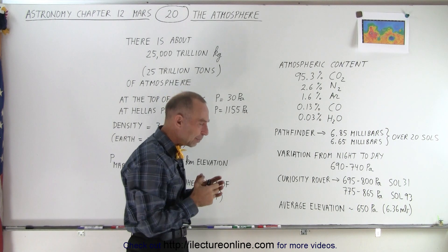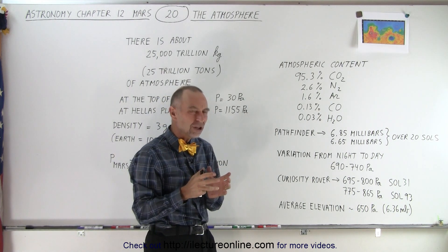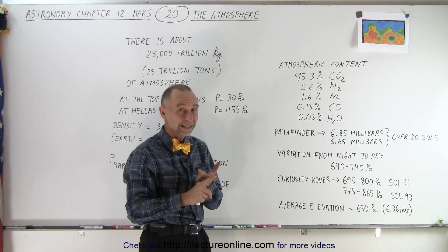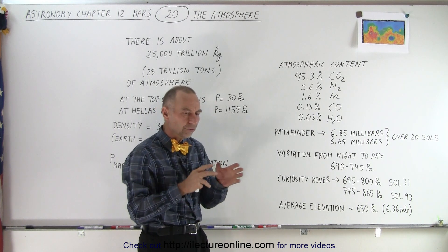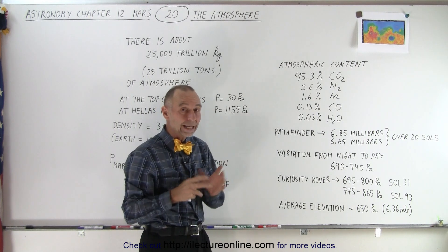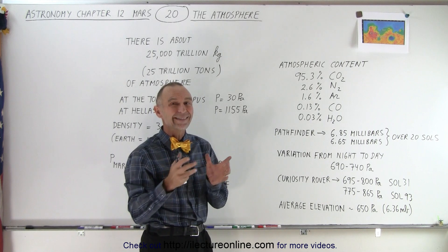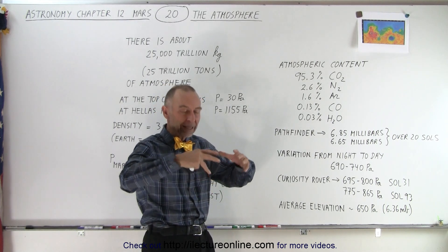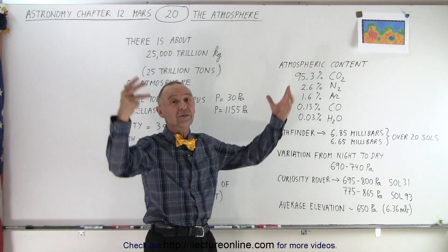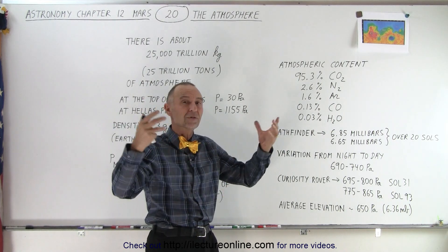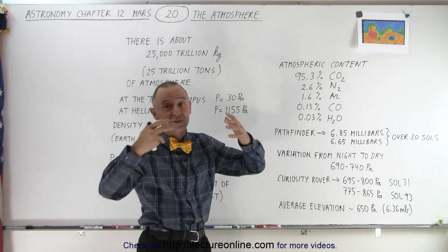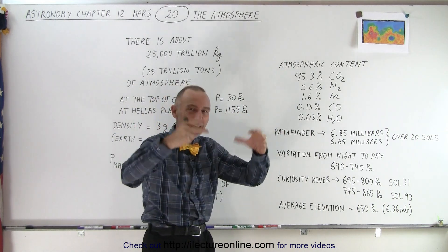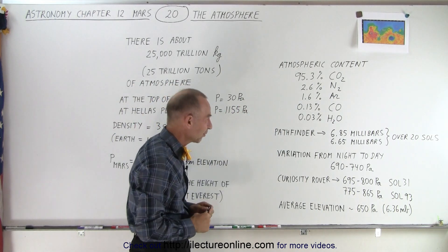Now, the atmospheric pressure on Mars changes a lot throughout the day and night, from one location to another, and it also varies a lot with seasonal changes. As we explained in the previous video, when the polar caps expand, it's at the expense of atmosphere being pulled out, or I should say carbon dioxide being pulled out of the atmosphere through freezing it and then snowing down onto the surface.